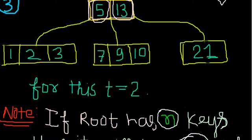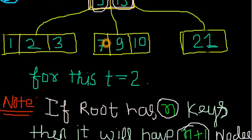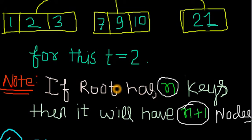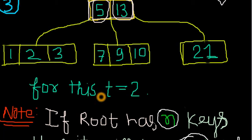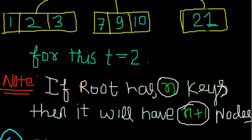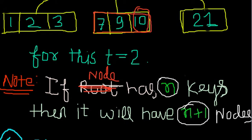Third thing: we have this diagram. Forget about root, it's not root. If a node has - what is a node? This is a node. If node has n keys - what are keys? These are keys. If node has n keys, then it will have n plus 1 children.